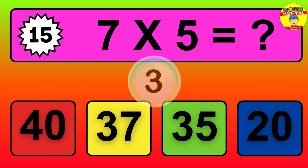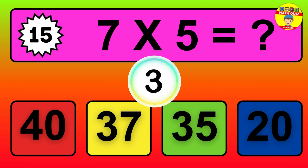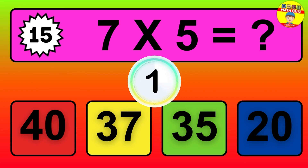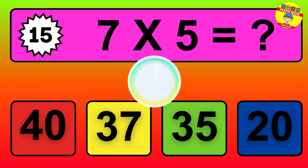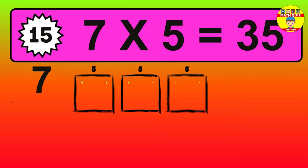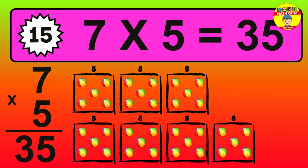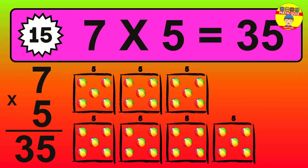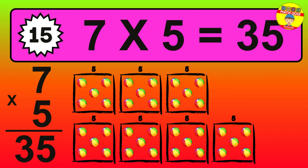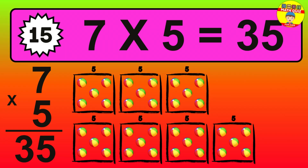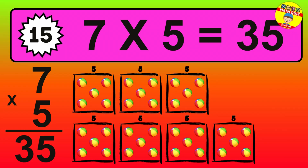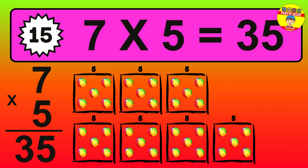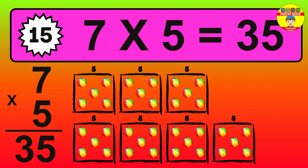Question 15. 7 times 5 is 35. To calculate, we have 7 groups with 5 balls each one. So, how many balls do we have? 35 balls.